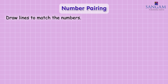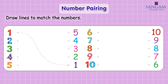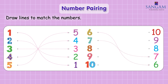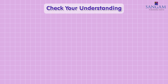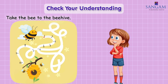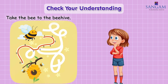Number pairing. Draw lines to match the numbers. One, two, three, four, five, six, seven, eight, nine, ten. Check your understanding: take the bee to the beehive. Shall we join the numbers, children? One, two, three, four, five, six, seven, eight, nine, ten. The bee reached its beehive!